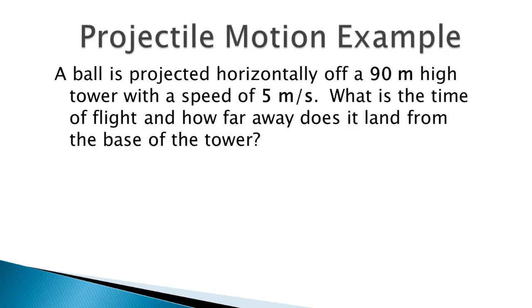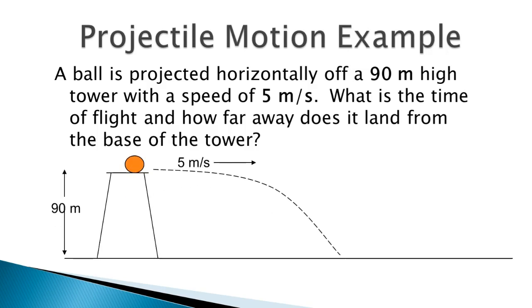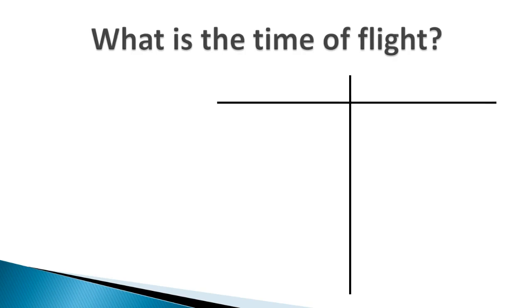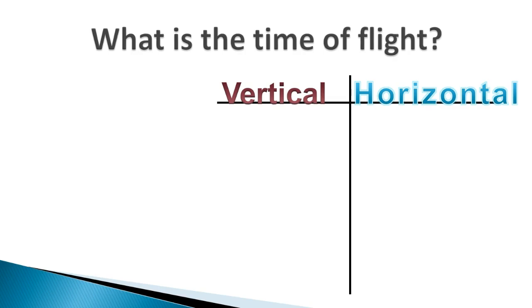Let's do an example. A ball is projected horizontally off of a 90-meter high tower with a speed of 5 meters per second. What is the time of flight, and how far away does it land from the base of the tower? It helps to draw the scenario: the ball is projected 90 meters high at 5 meters per second horizontally. 90 meters is a vertical value — our vertical height — and 5 m/s is our horizontal velocity. We want the time and the horizontal distance from the base.